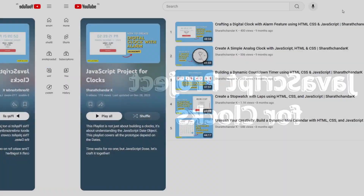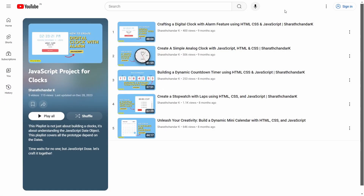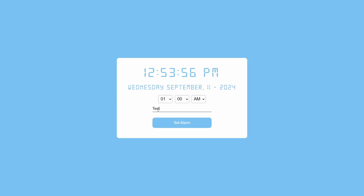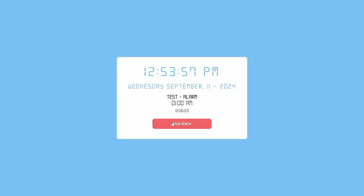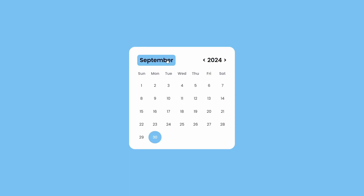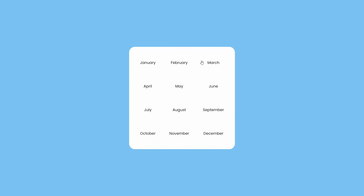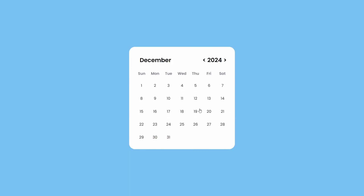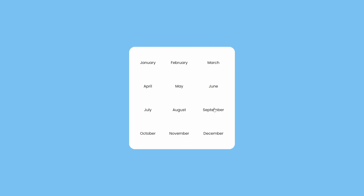Third, JavaScript projects for clocks. In this playlist, we created clocks from digital to analog with alarm features, a countdown app and a dynamic calendar. Here we learned about JavaScript date objects and functions, and how to use setInterval and setTimeout based on time duration.